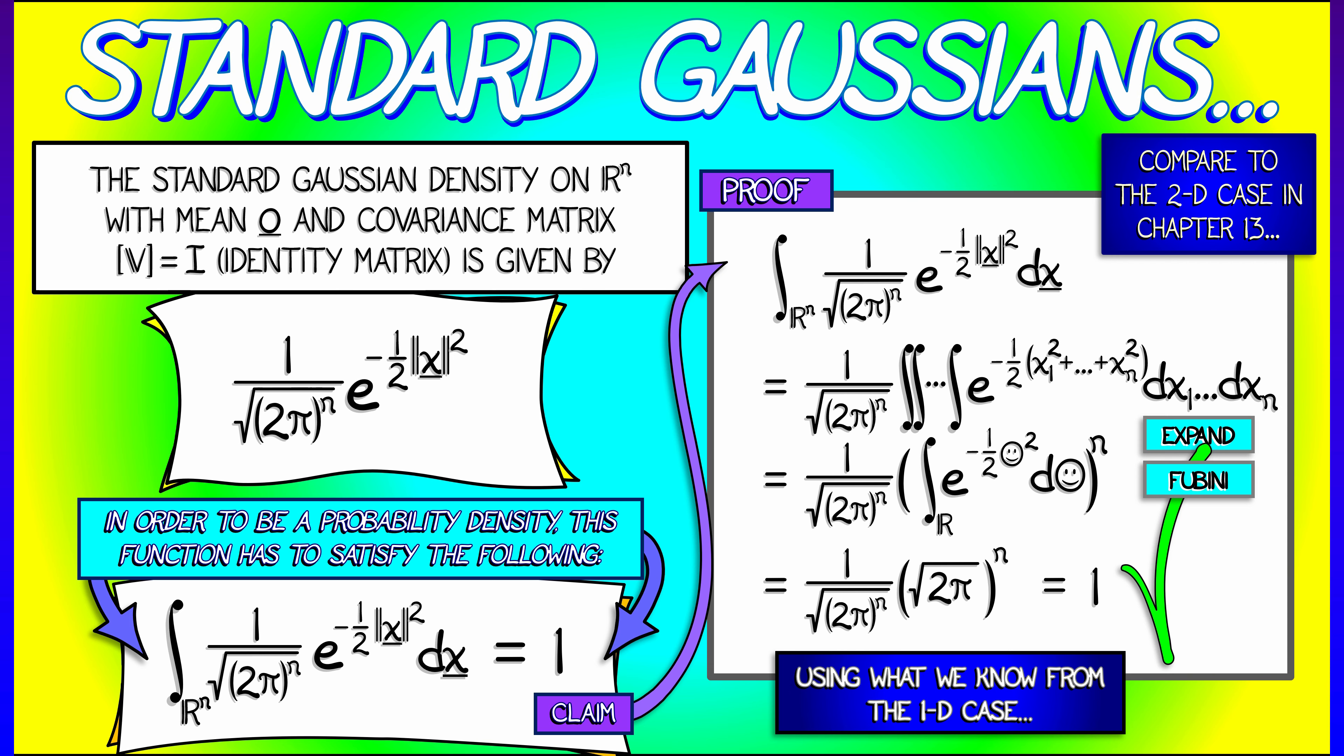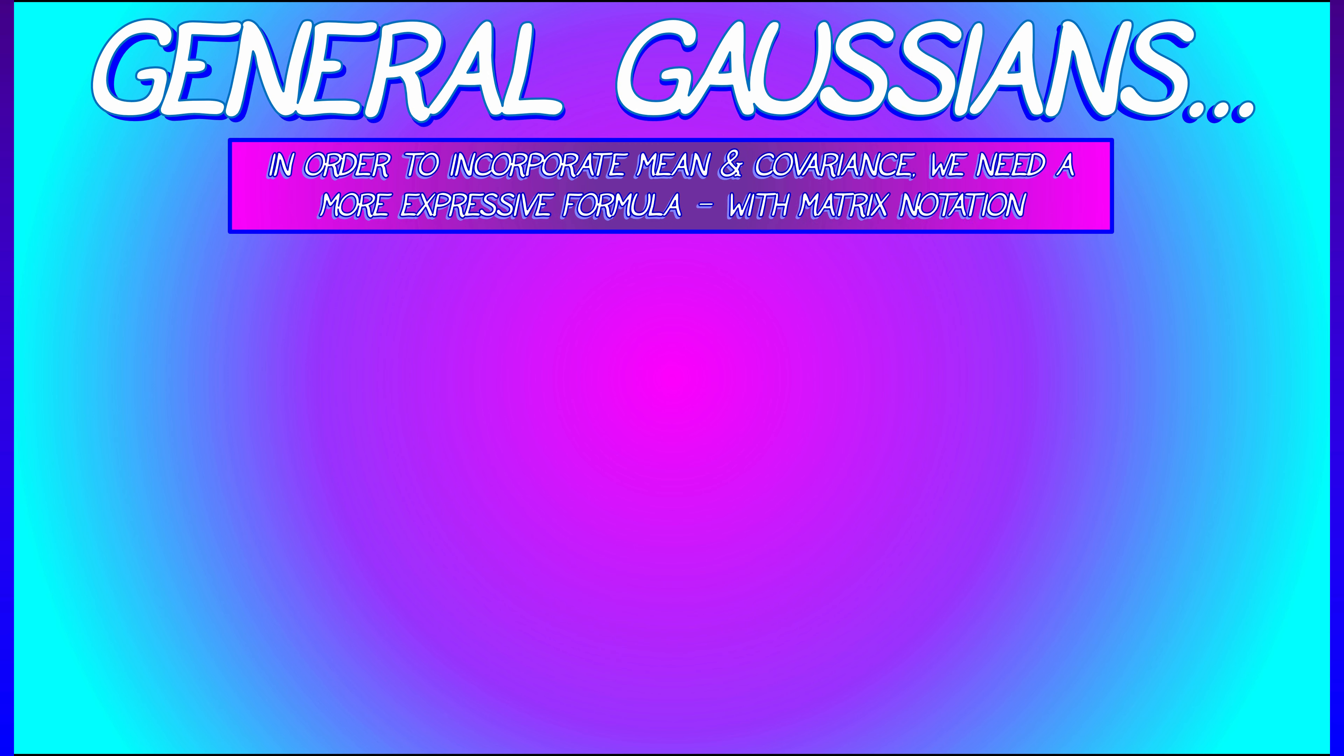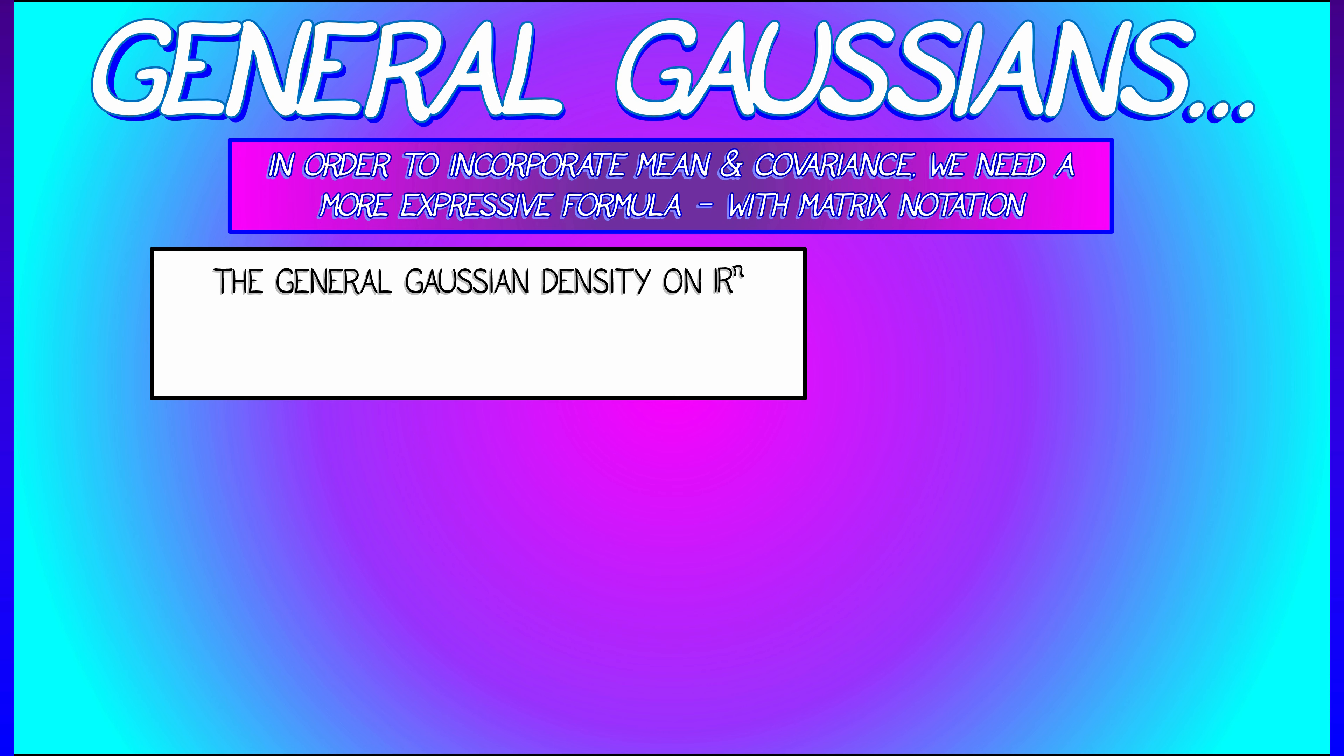What about a more general Gaussian, where we have mean at some location μ in R^n, where we have an arbitrary covariance matrix V? Well, this expression is going to be a bit more complicated. Stick with me on this one.